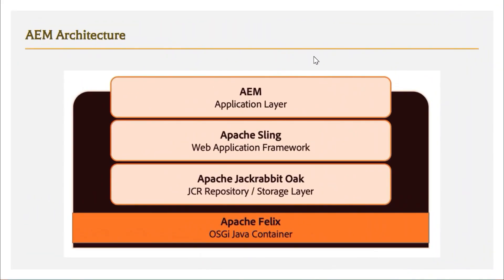Let's get started with the presentation. This is the AEM architecture which we are trying to understand. If you see here, the Apache Jackrabbit Oak which is the JCR repository, and the Apache Sling and AEM layer — all of these are present inside this OSGI Java container. So a container, as its name suggests, contains something — in this case it contains all the Java classes related to the JCR repository, Apache Sling, and AEM.